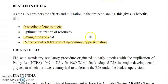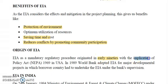Now let's talk about the origin of EIA — how this Environmental Impact Assessment originated. EIA as a mandatory regulatory procedure originated in the early 1970s with the implementation of the National Environmental Policy Act, NEPA, in 1969 in the USA. This was the first time EIA was made mandatory.